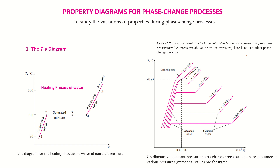In this video I will explain the property diagrams for phase change processes. These diagrams are used to study the variation of properties during phase change processes. There are three types of diagrams to explain the phase change process.